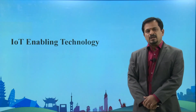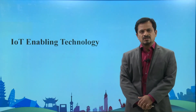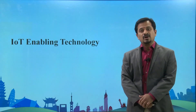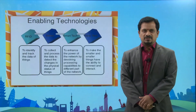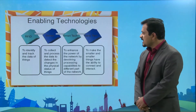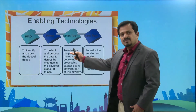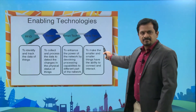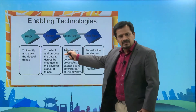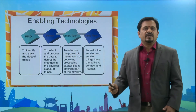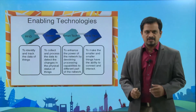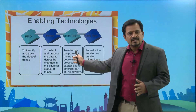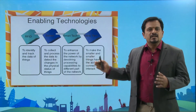There are four major technologies which are going to support IoT and act as a backbone of IoT technology. These enabling technologies start from RFID, sensors, smart technology, and nanotechnology. RFID is used to identify and track the data of things. Sensors collect and process the data to detect changes in the physical status of things.